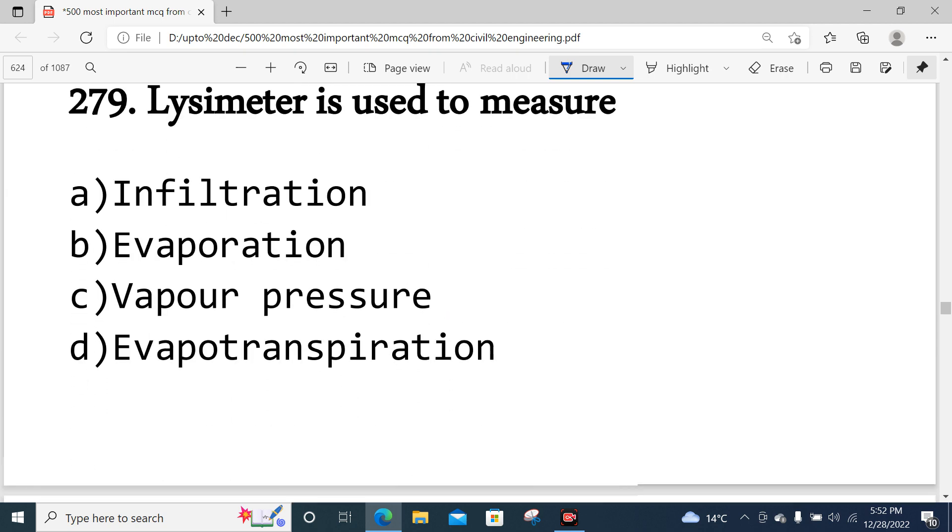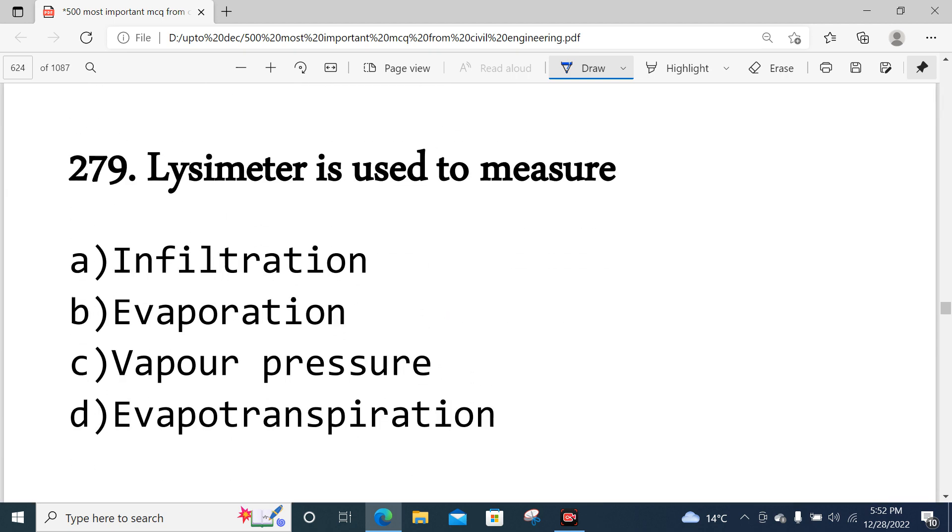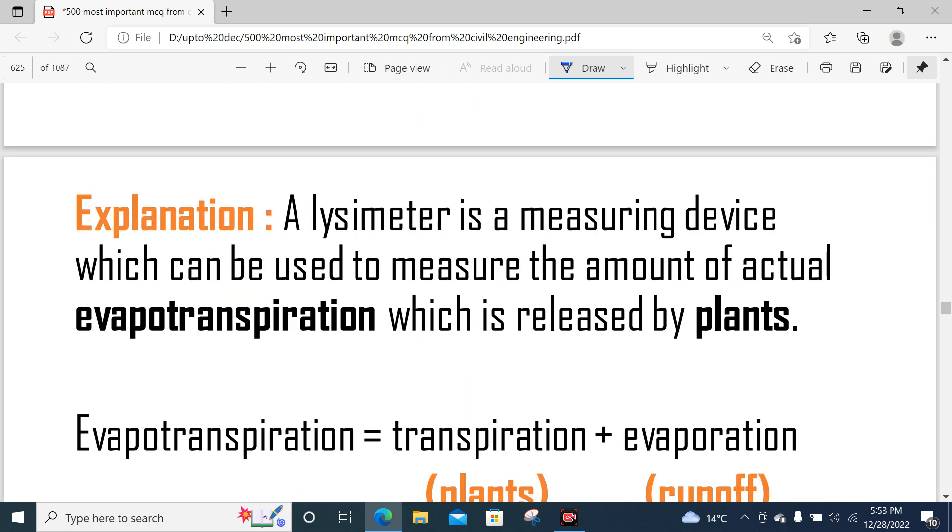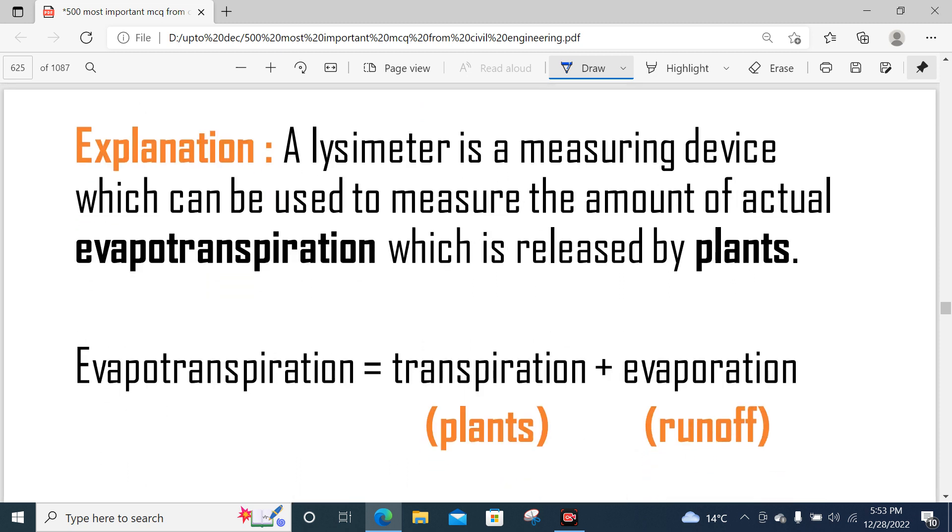Next is a very important question: Lysimeter is used for what? Lysimeter is a device to measure evapotranspiration. The answer is evapotranspiration. Lysimeter is basically a measuring device which can be used to measure the amount of evapotranspiration which is released by plants. Evapotranspiration means transpiration plus evaporation.